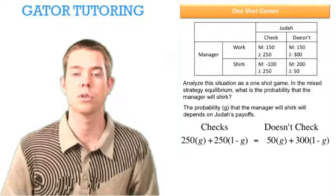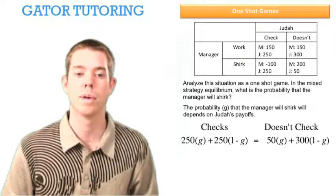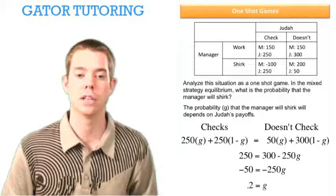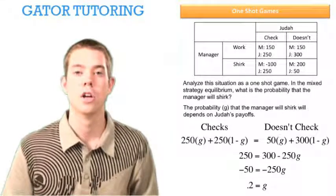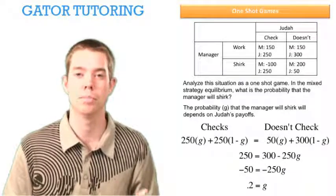Again, we're going to set these two equations equal to solve for G or the probability that the manager will shirk. We do that, we solve down and we see that G is equal to 20%. So those two probabilities, H and G, aren't equal and you need to be able to solve for both.